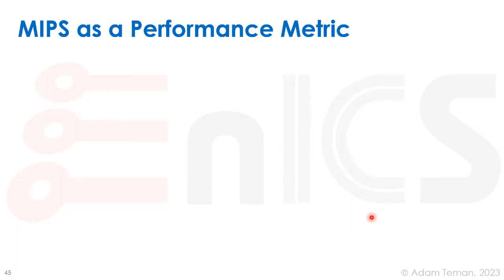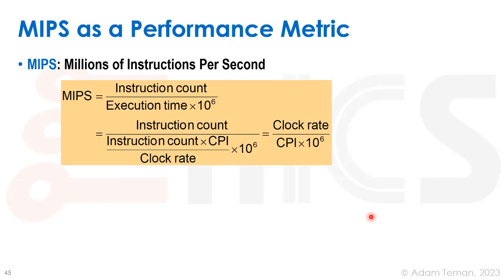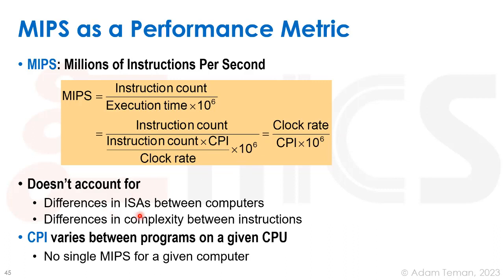A last note covers MIPS — millions of instructions per second — one of many commonly used figures of merit to show how fast a CPU is. MIPS is the instruction count divided by execution time, factored into millions. Since execution time equals instruction count times CPI divided by clock rate, substituting and simplifying gives: MIPS = clock rate divided by CPI times one million. So MIPS is a commonly used way to compare different machines.